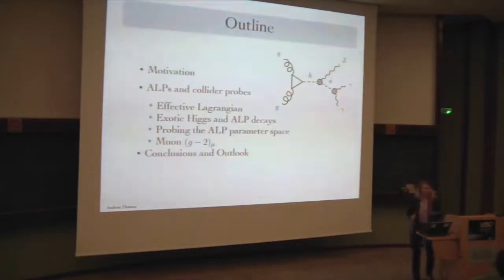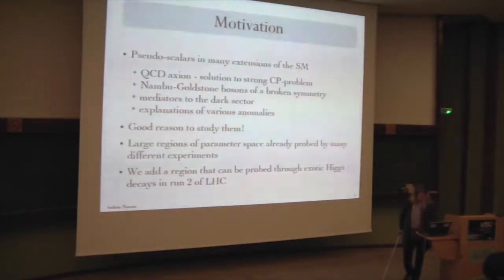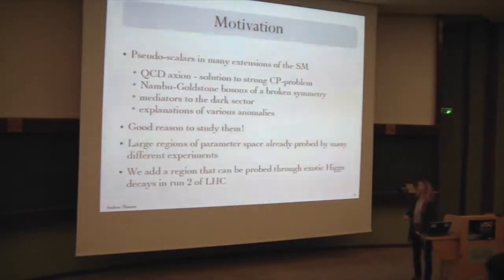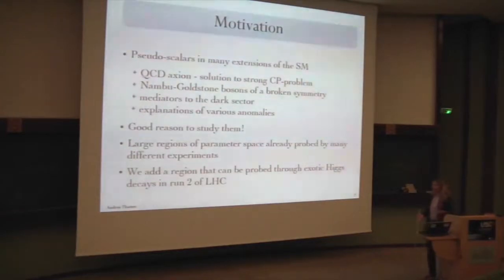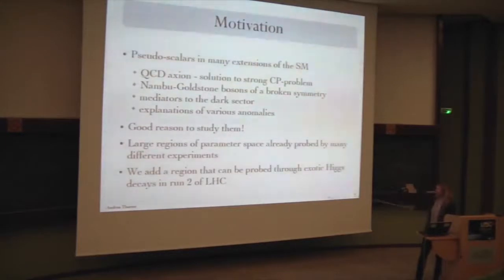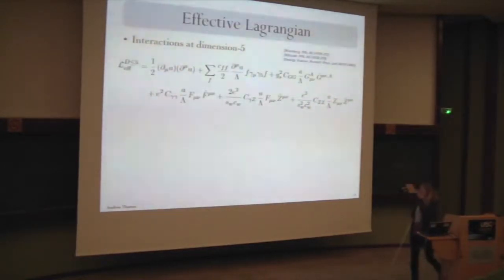There is a connection we can make to G minus 2, so I'll talk a little bit about that. We started from a very phenomenological point of view to look for these light pseudoscalars. The motivation for them — as we heard — is the QCD axion, but generally these light pseudoscalars can appear if we have a broken global symmetry, they can be mediators to the dark sector, and they can explain various anomalies. Large regions of the parameter space have already been excluded by many different experiments, and we think we can add a region by looking at these exotic Higgs decays.